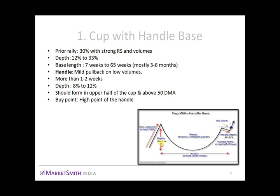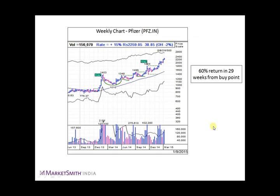The ideal buy point is the most recent resistance level, that is the high point of the handle, and the ideal buy range is 5% from the top of the handle. The stock should cross this resistance level with at least 40 to 50% above-average volumes. For best results, try to buy as close to the ideal buy point as possible.